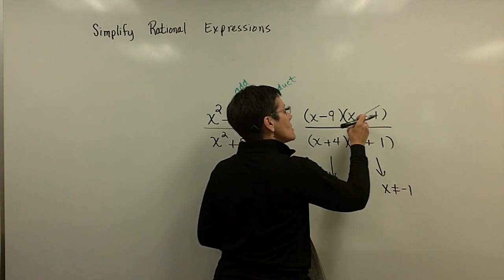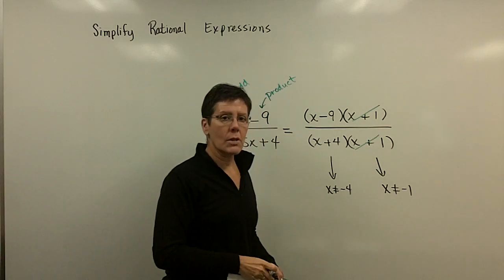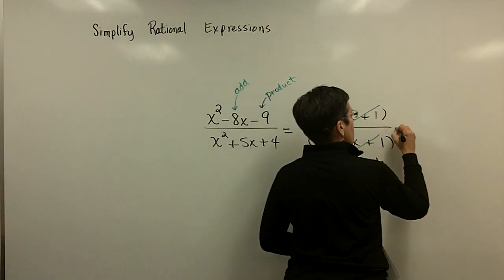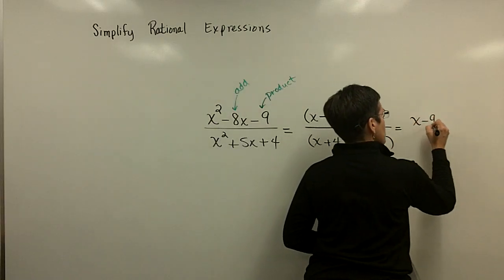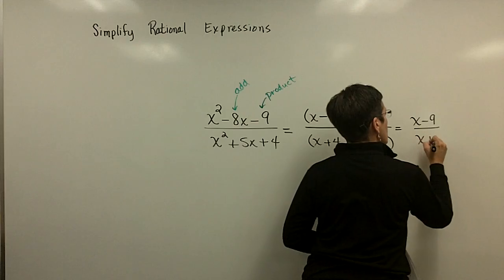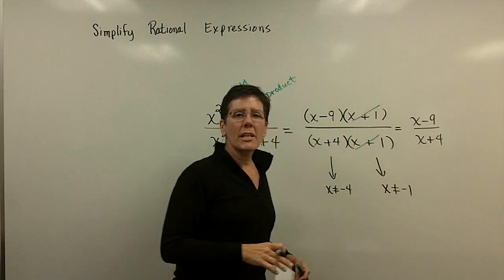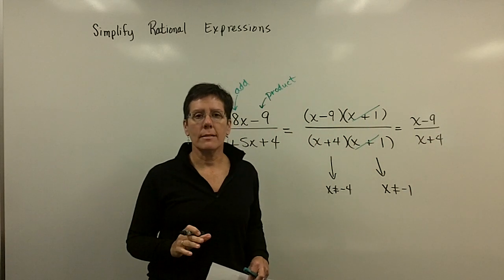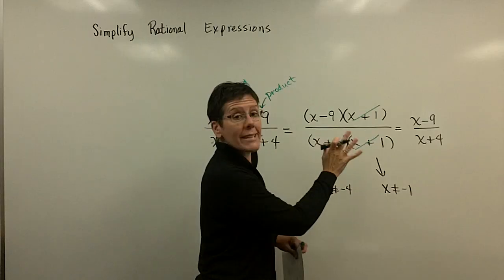The final answer to this problem when I remove the common factors is the x minus 9 and the x plus 4. Be careful. Don't go crossing those x's off. This can't be factored. Those are binomials, as is.